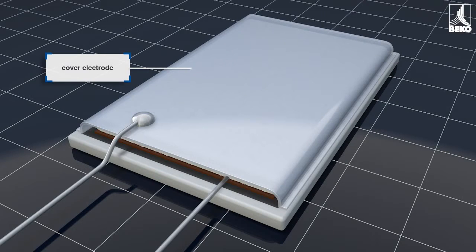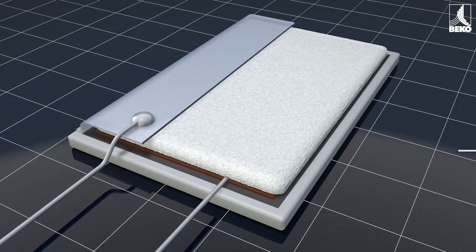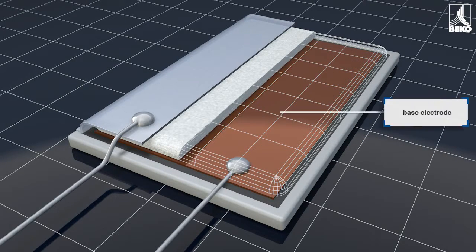It's made up of a permeable cover electrode, a hygroscopic polymer layer of so-called dielectric material, and a base electrode.